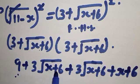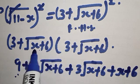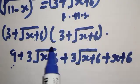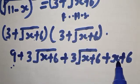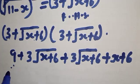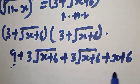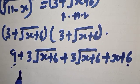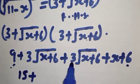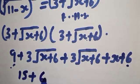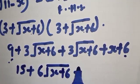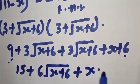So we have 3 times 3 giving 9, then 3 times root of x plus 6 plus another 3 times root of x plus 6, giving 6 root of x plus 6, and root of x plus 6 times root of x plus 6 gives x plus 6. The full right hand side simplifies to 15 plus 6 root of x plus 6 plus x.